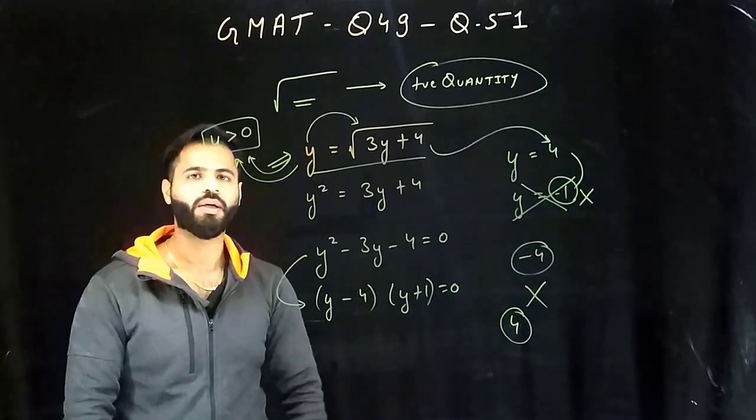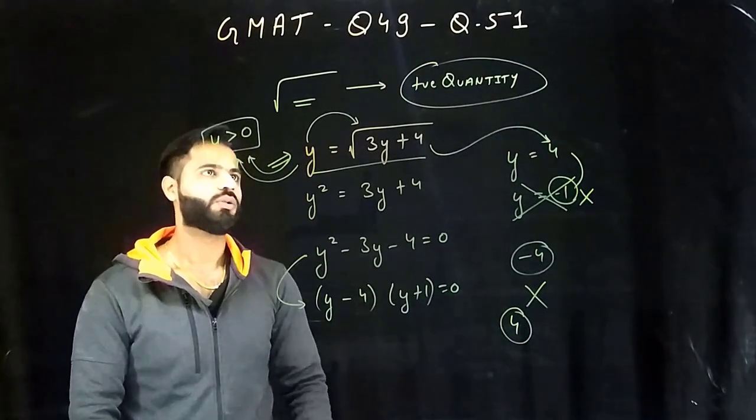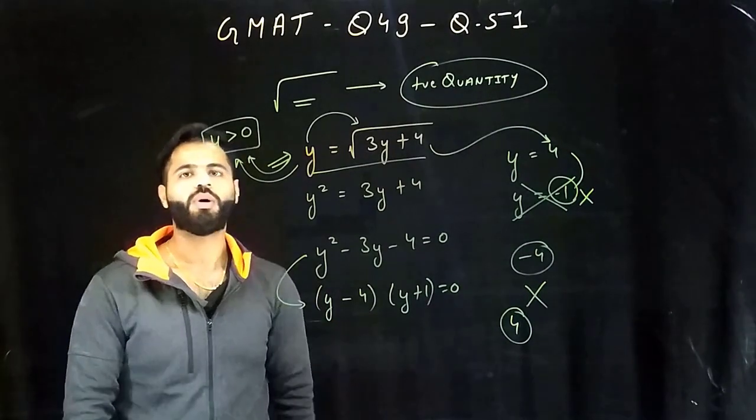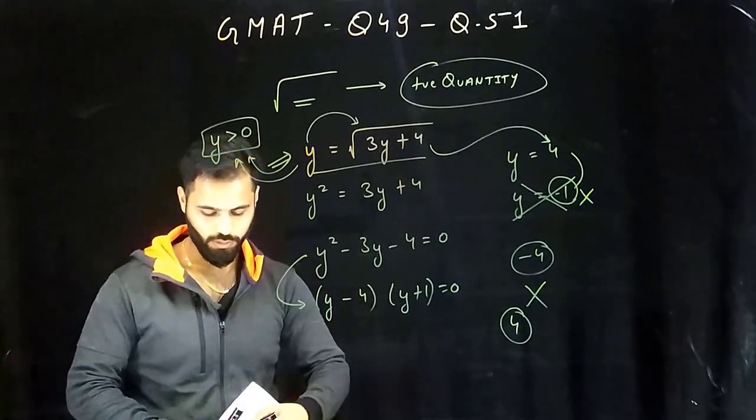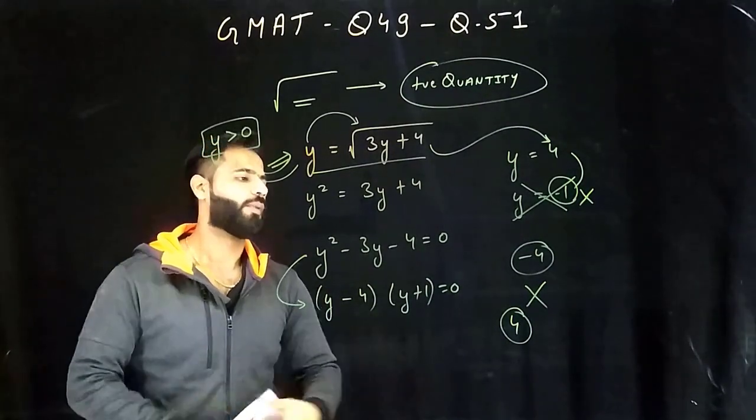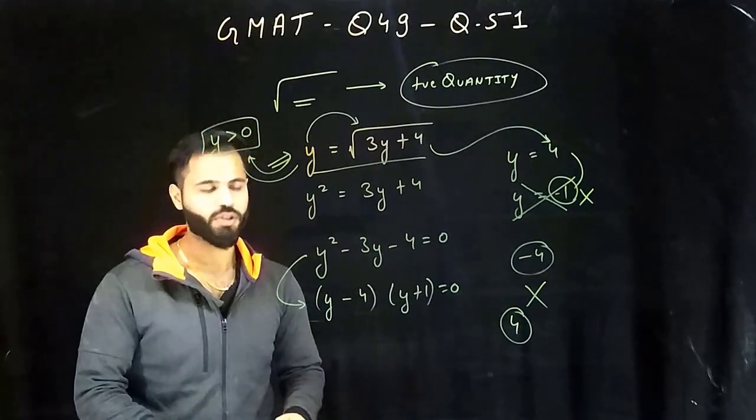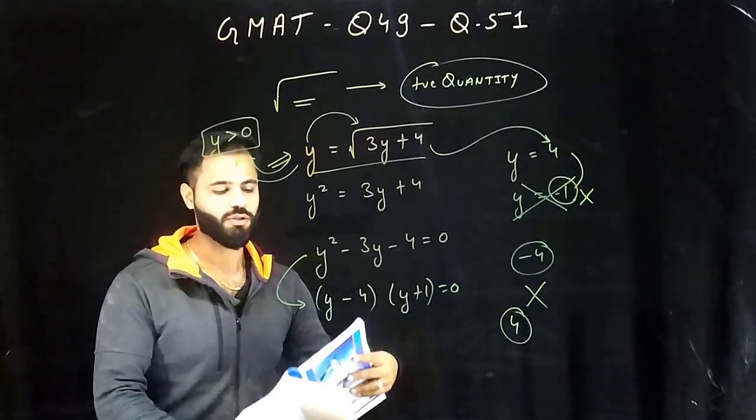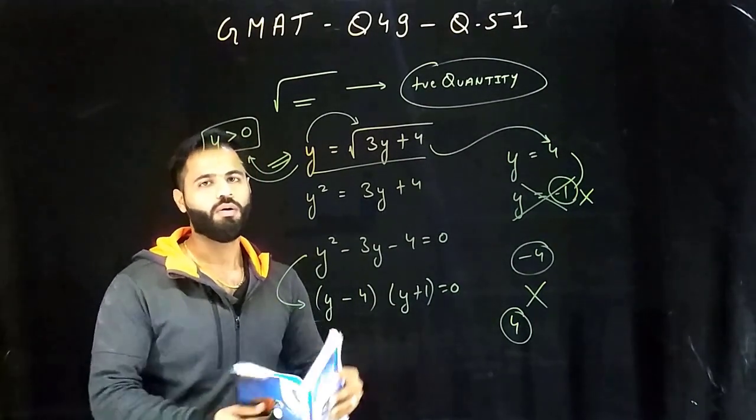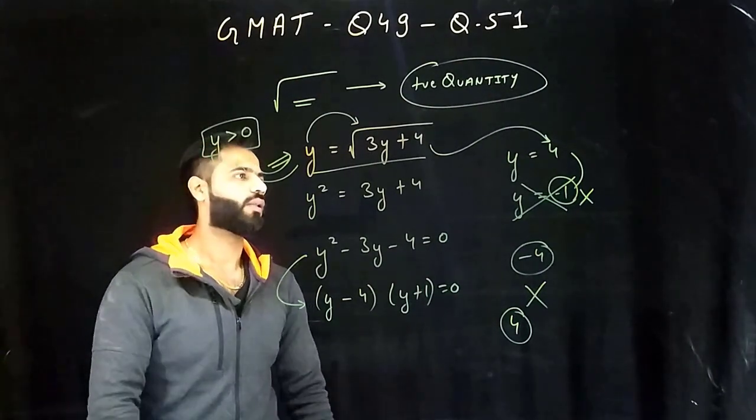So that's how GMAT plays. It seems like we're going correct but actually we are not. This is the third trap: remember square root is always a positive point. Thank you, and make sure you subscribe us so that you do not miss such important concepts where GMAT is actually playing with us. We have a lot more and you'll see that in the coming videos.